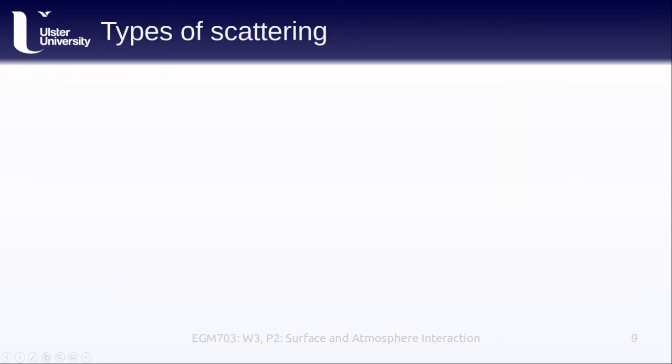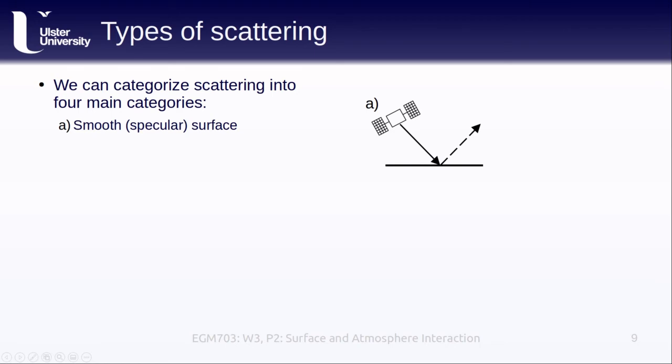We can categorize scattering from surfaces into four main categories. The first of these is scattering from a smooth or specular surface. For microwave remote sensing, a very common example of this is calm water bodies, because the water surface reflects almost all of the signal away from the sensor. The second is scattering from a rough surface, and we can break this into two different categories. In the first, randomly rough surfaces, this is including things like agricultural fields, or low vegetation, like grasses.